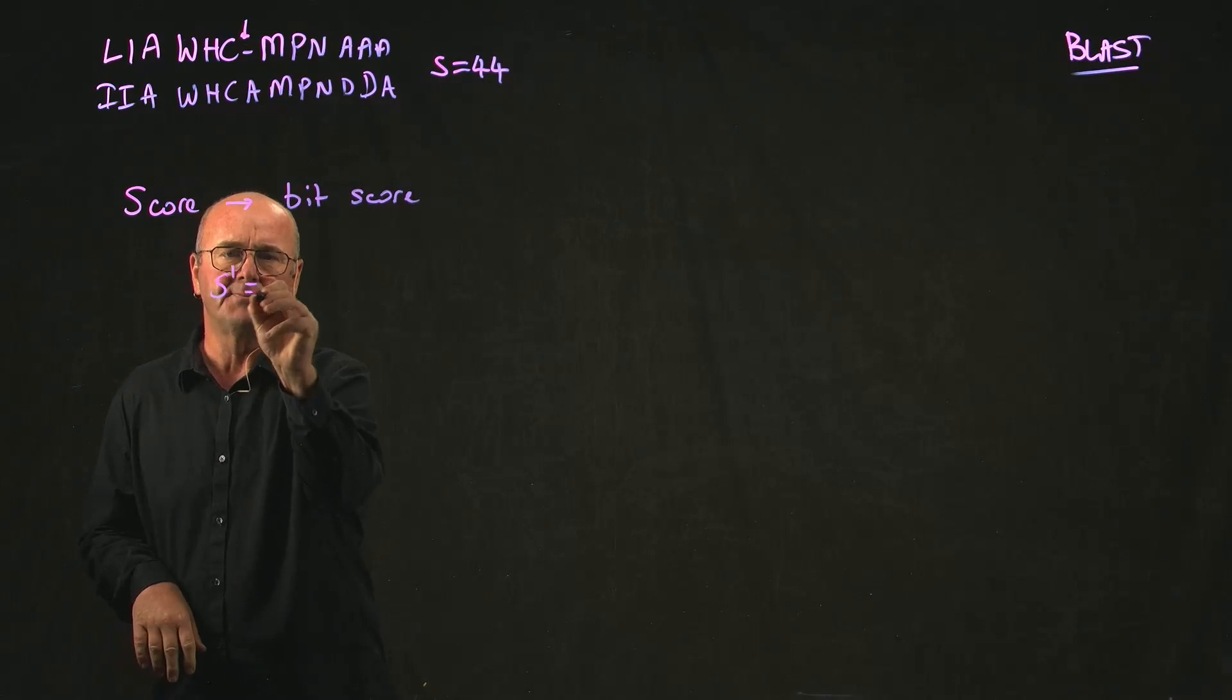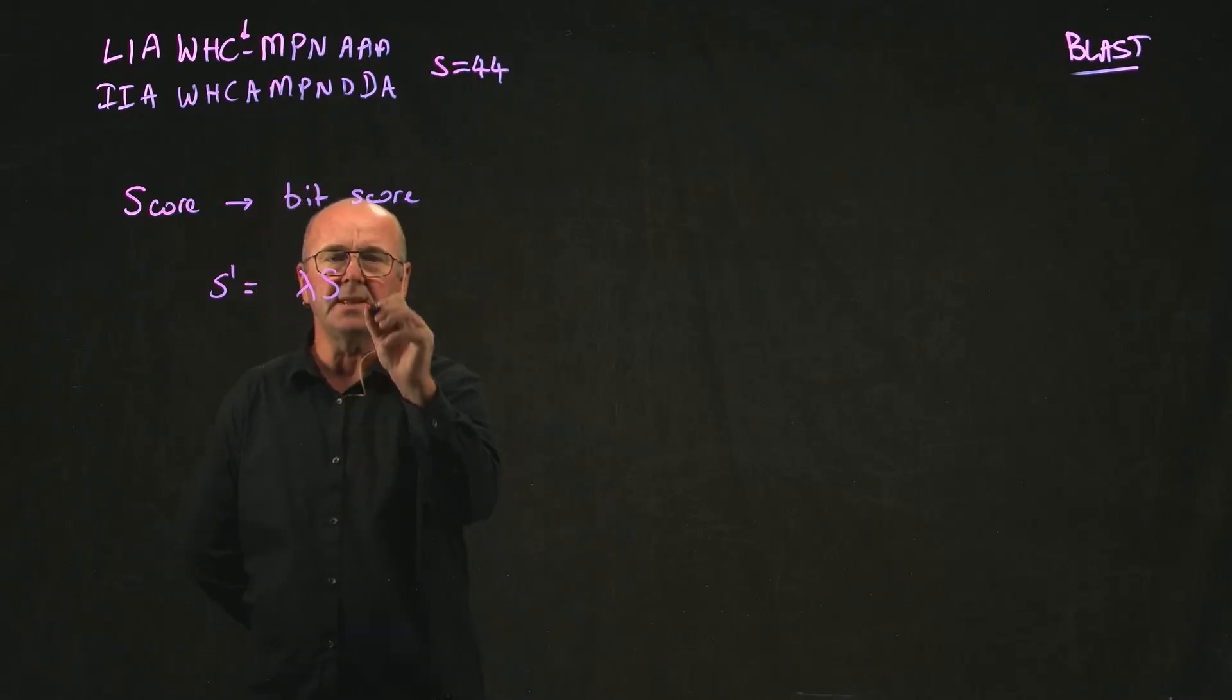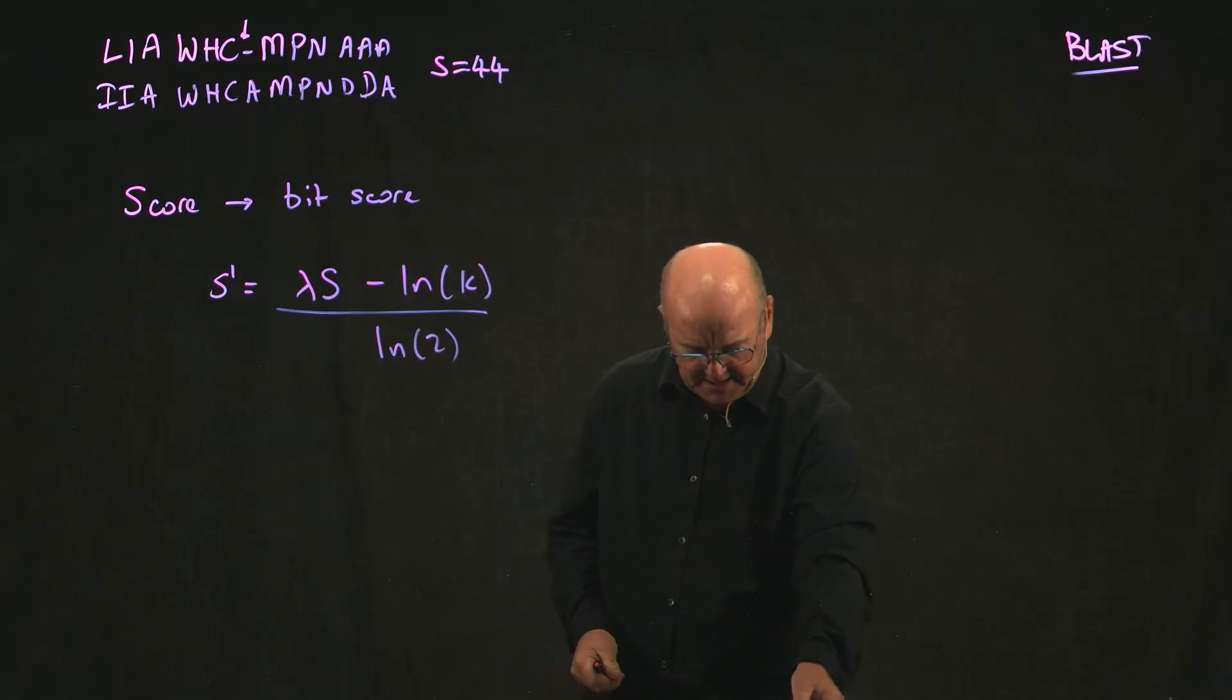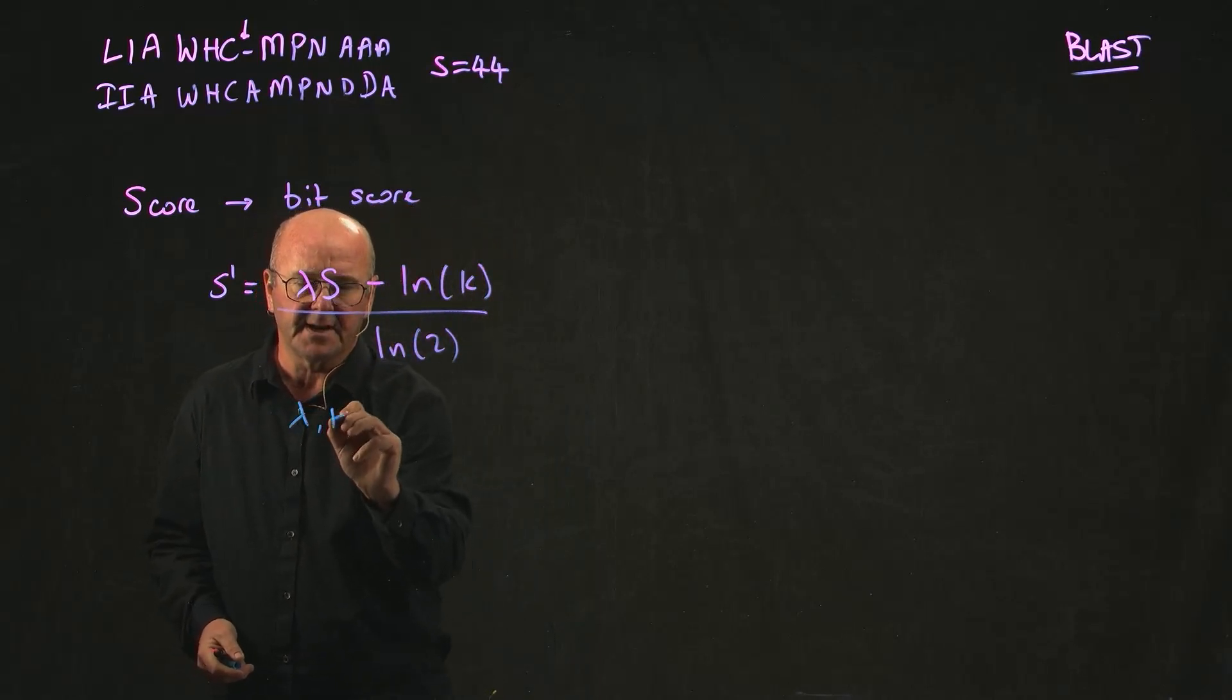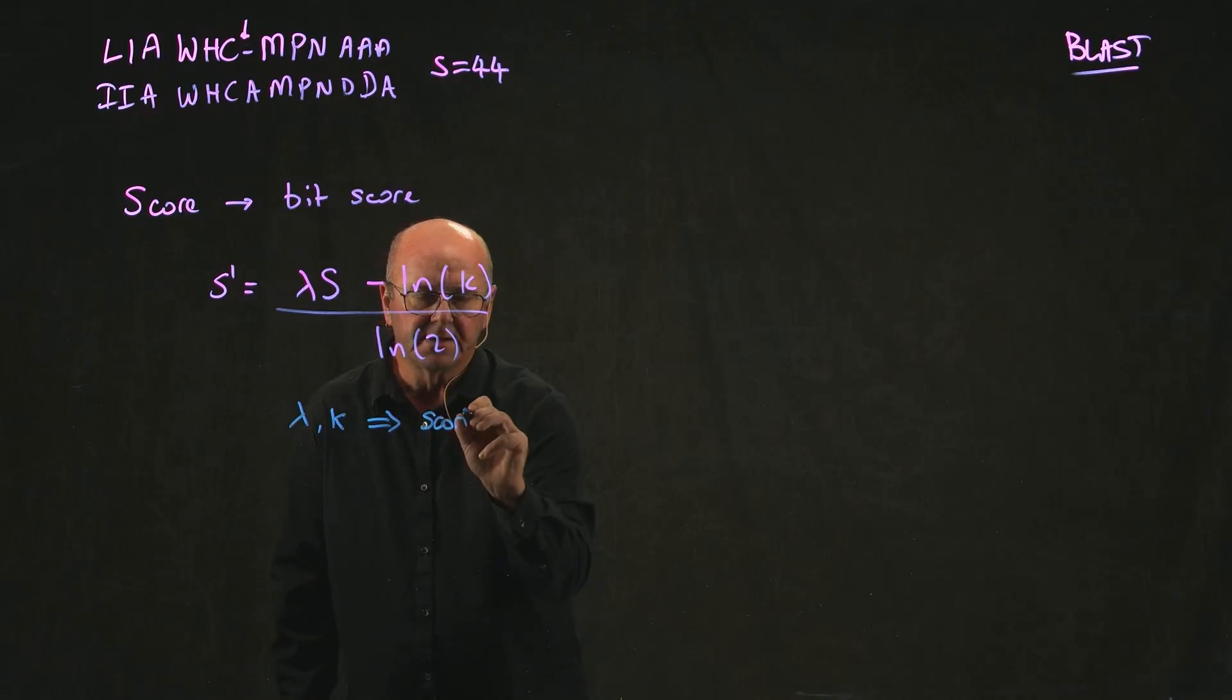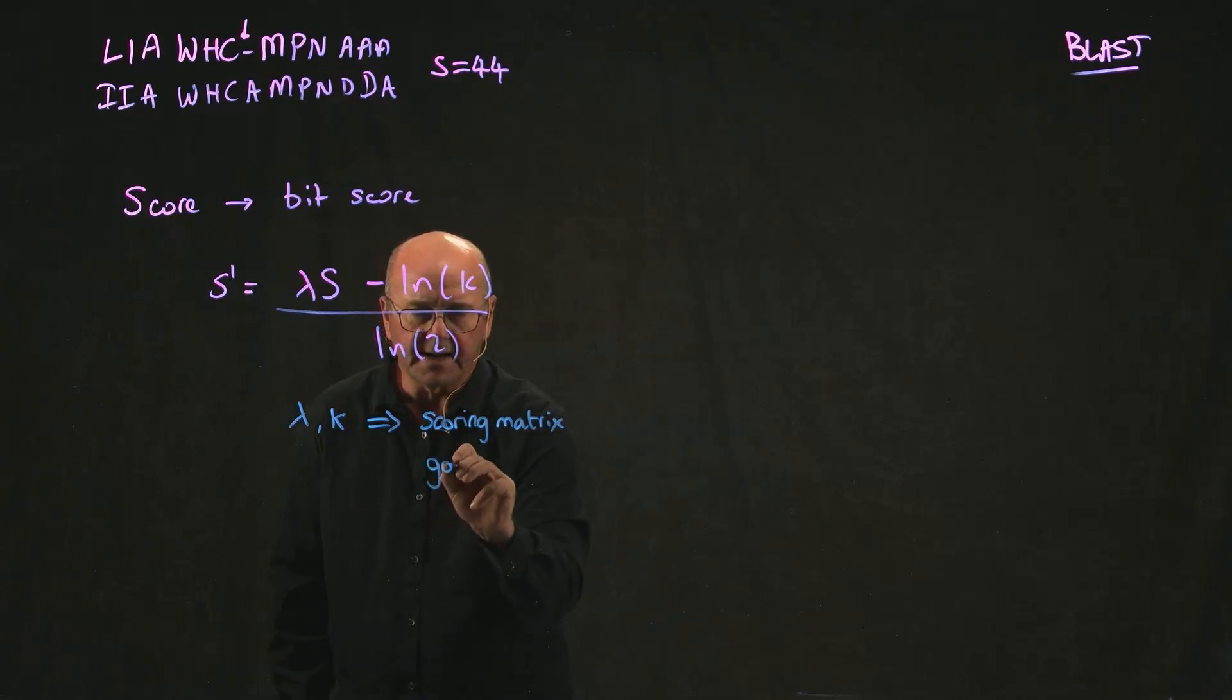The bit score normalizes to a couple of different factors. So the bit score S prime is lambda times the raw score minus the natural log of K divided by the natural log of 2. So this is what's called our bit score, and we're normalizing it. And here we've got two constants, lambda and K, and they're both dependent on the scoring matrix that we use, and they're dependent on our gap penalties.